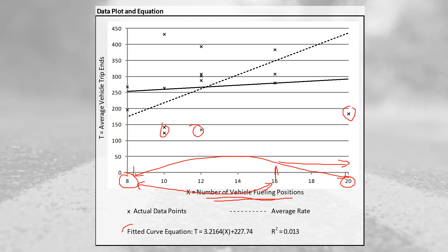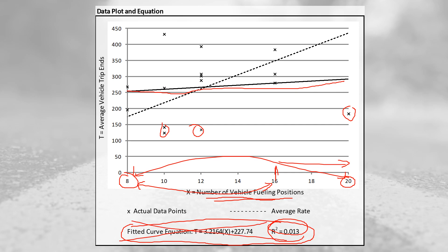We are given the fitted curve equation, shown as the solid line, but the R-squared is really low and the curve doesn't line up well with the data. The low R-squared means we should not use the fitted equation. That means we'll use the average rate instead, and looking at it in relation to the standard deviation, that is something we can apply.